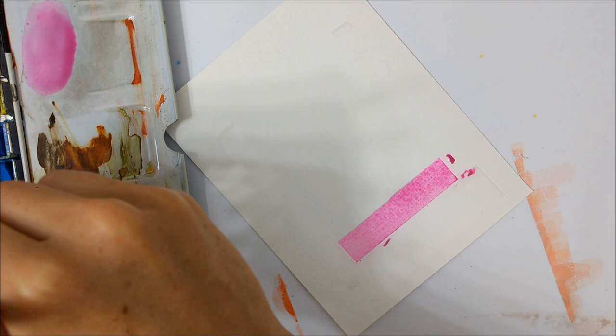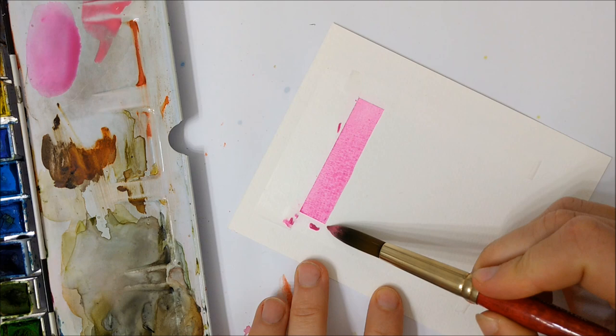The first thing you want to do is use scotch tape to tape a rectangle on your watercolor piece of paper. This is just to make sure that the cake we are painting remains nice and straight, neat and tidy on the edges.